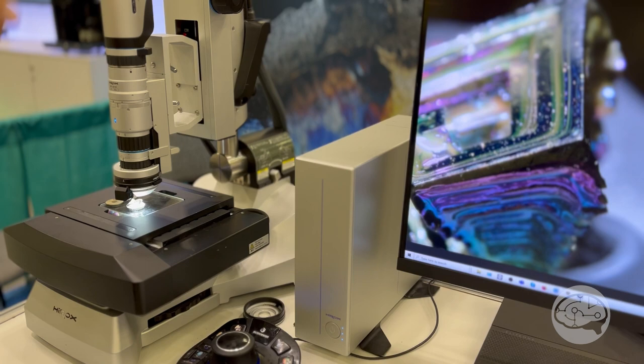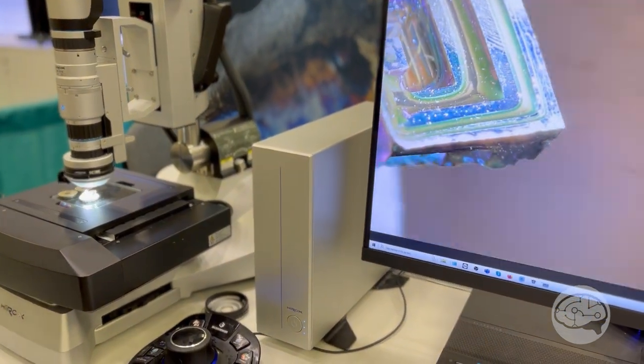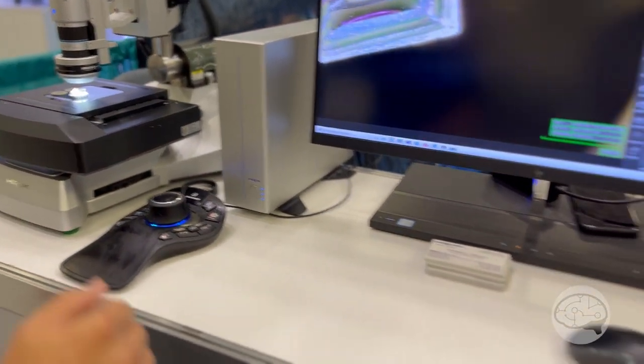Additionally, if anything goes wrong, it's typically going to be on the computer side - say a hard drive goes bad or monitor breaks - you simply just replace that instead of having to replace the microscope system. Computer technology typically ages a little bit faster than microscope technology.